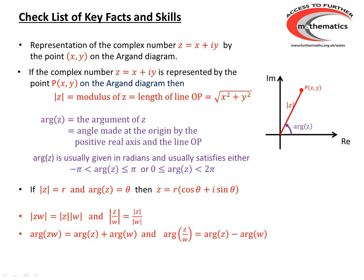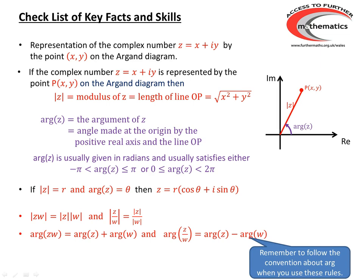We should know that the modulus of z times w is the modulus of z times the modulus of w. The modulus of z divided by w is the modulus of z divided by the modulus of w. The argument of z times w is the argument of z plus the argument of w. And the argument of z divided by w is the argument of z minus the argument of w. We need to remember that the argument of z should lie between minus pi and pi, or possibly between 0 and 2 pi.